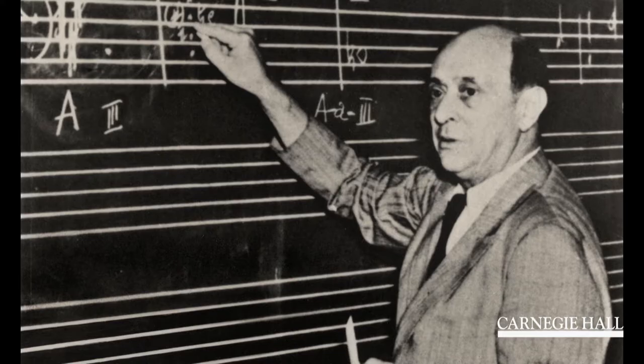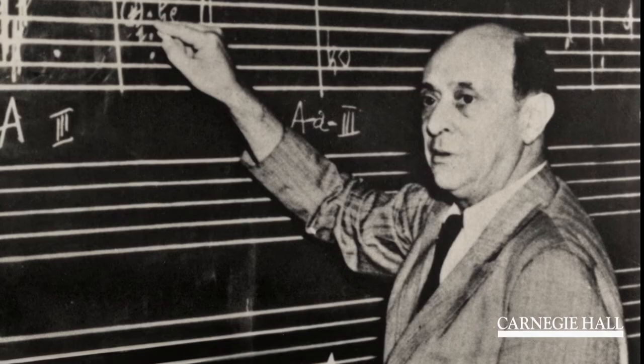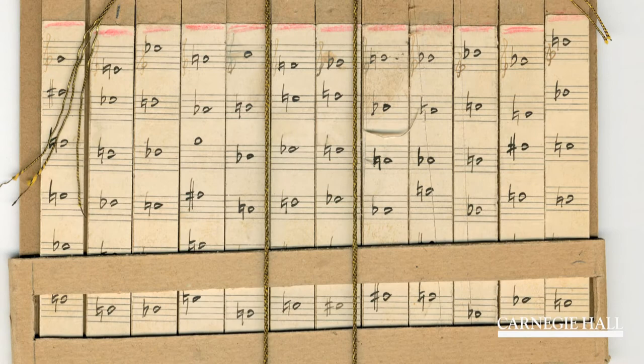Schoenberg's Verklaerte Nacht, or Transfigured Night, is perhaps one of his best-known works. Slightly ironic, considering that Schoenberg would become best known for inventing a system of the democratization of pitch known as the 12-tone system.